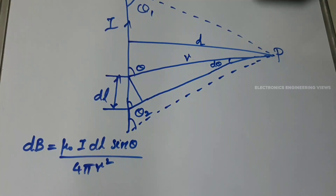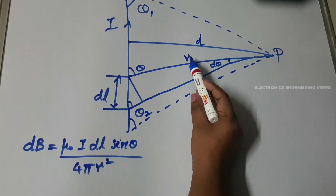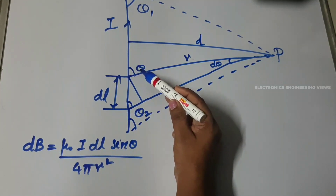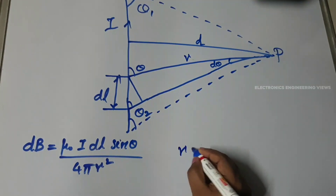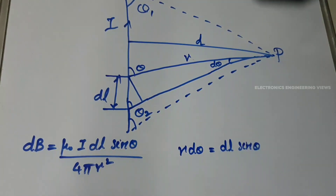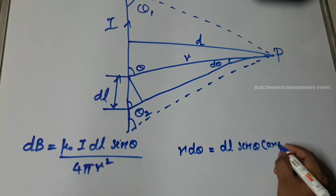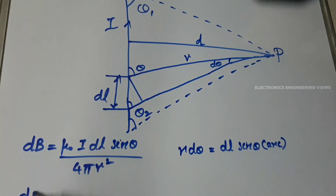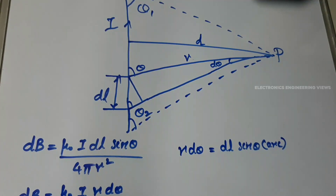From this figure, r·dθ is equal to dl·sinθ. Substituting this value in the dB equation, we get dB is equal to μ₀ · I · r · dθ · sinθ divided by 4πr².